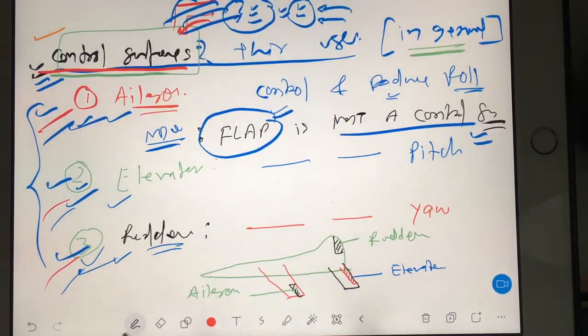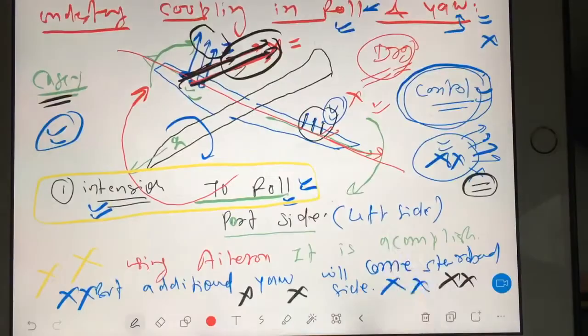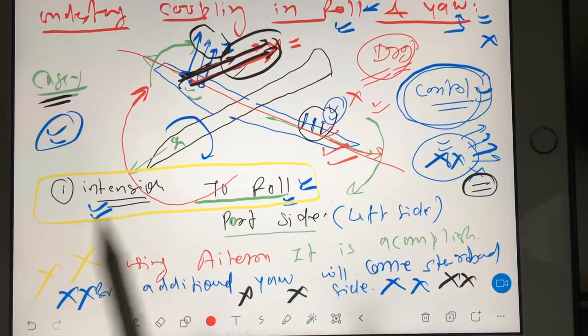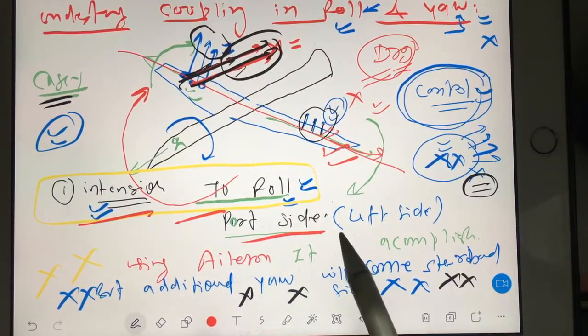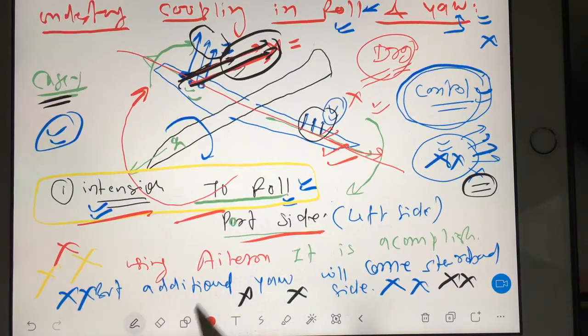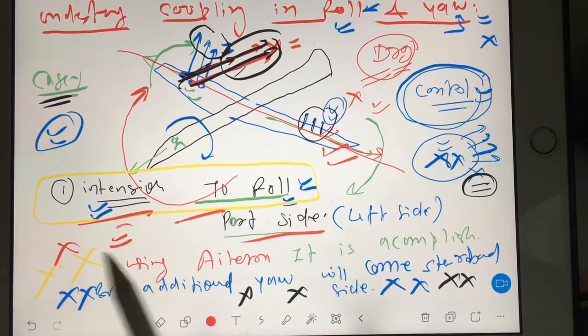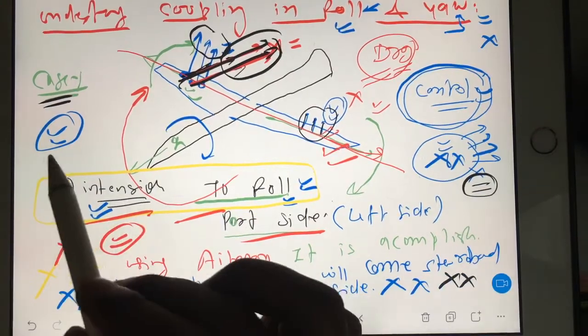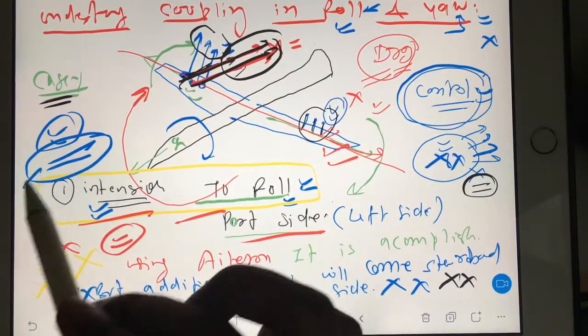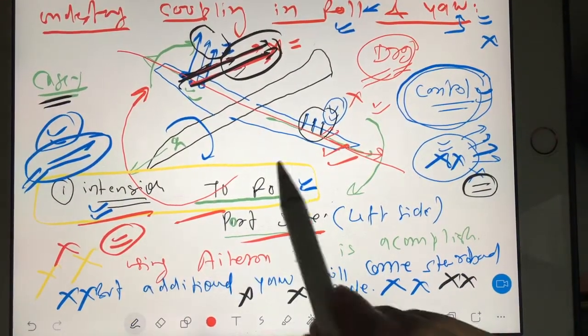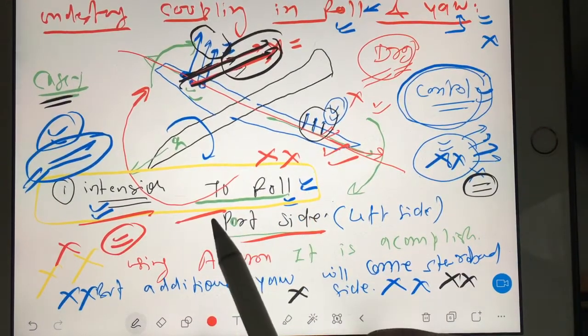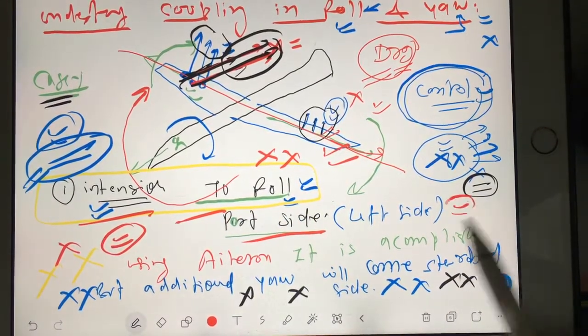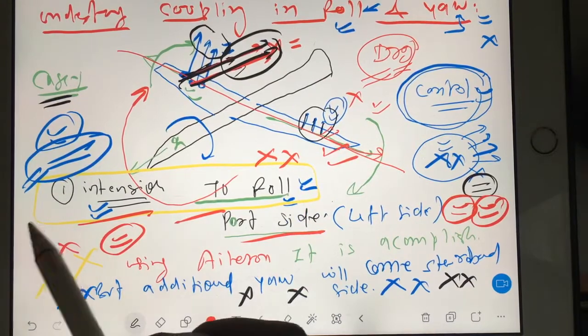When I was explaining this part, intention to roll port side, then something is happening and how pilot will counter that situation. So now I will explain that pilot will never use aileron alone to produce roll, and now you are in the stage to reply this.